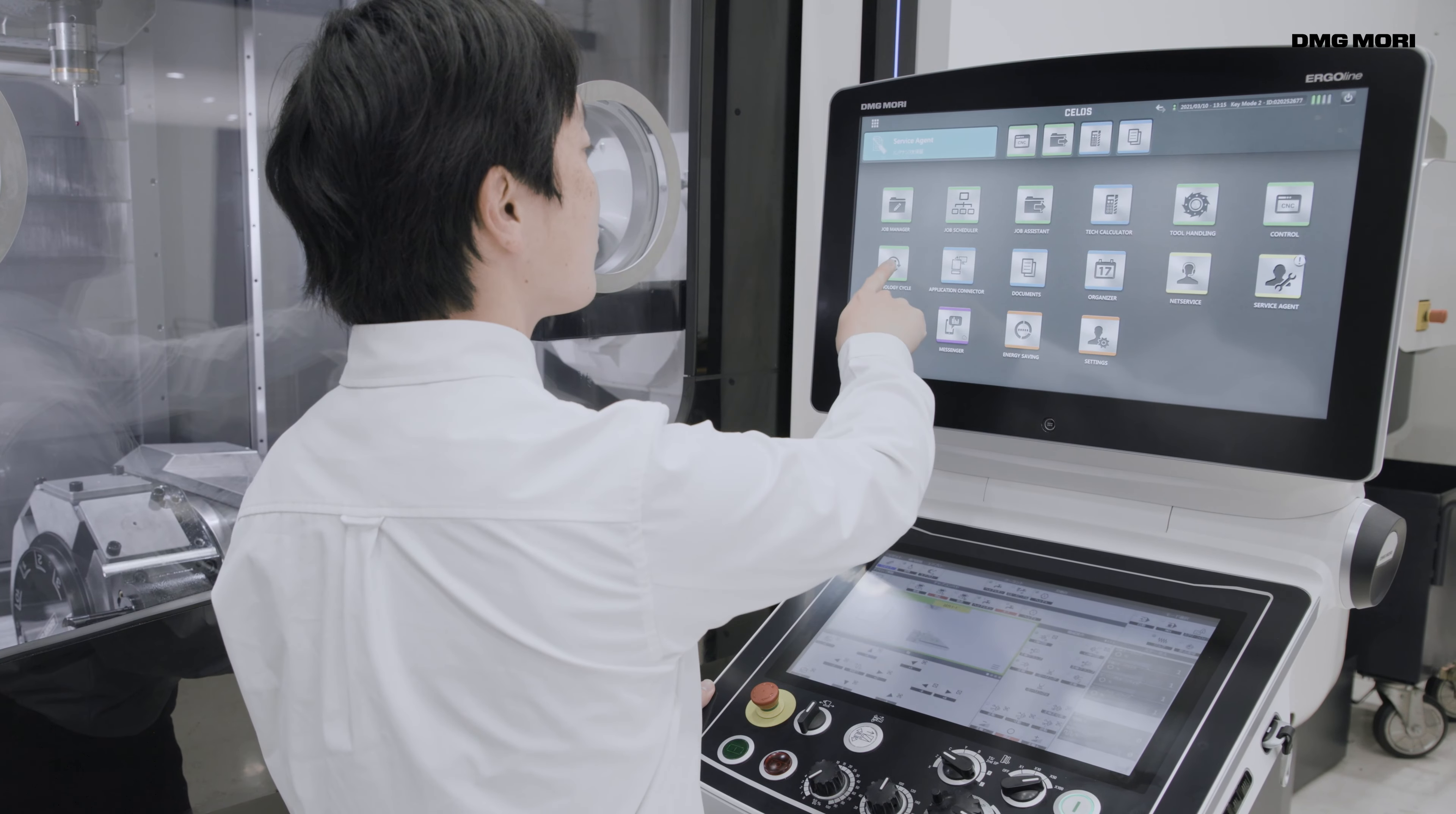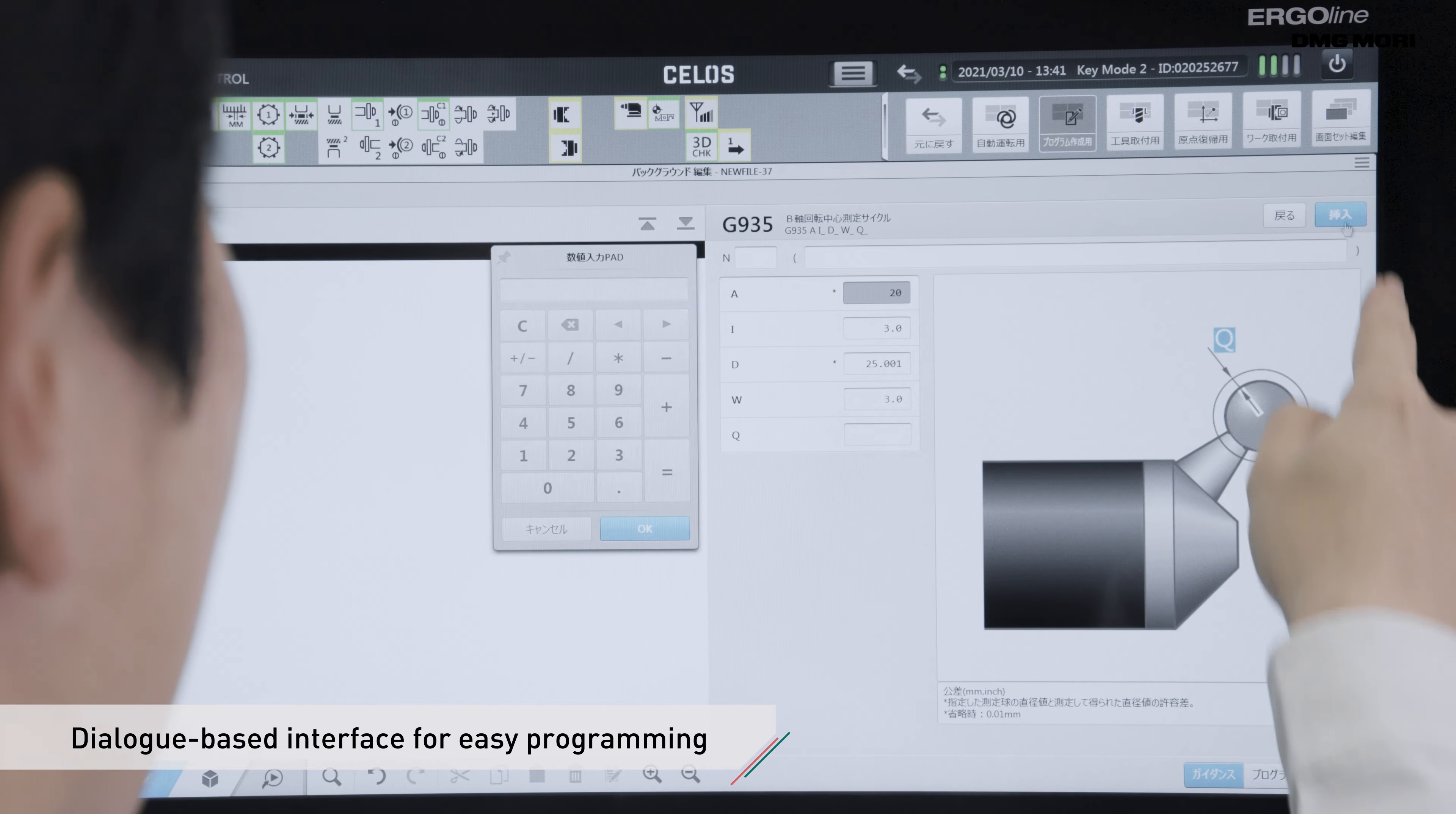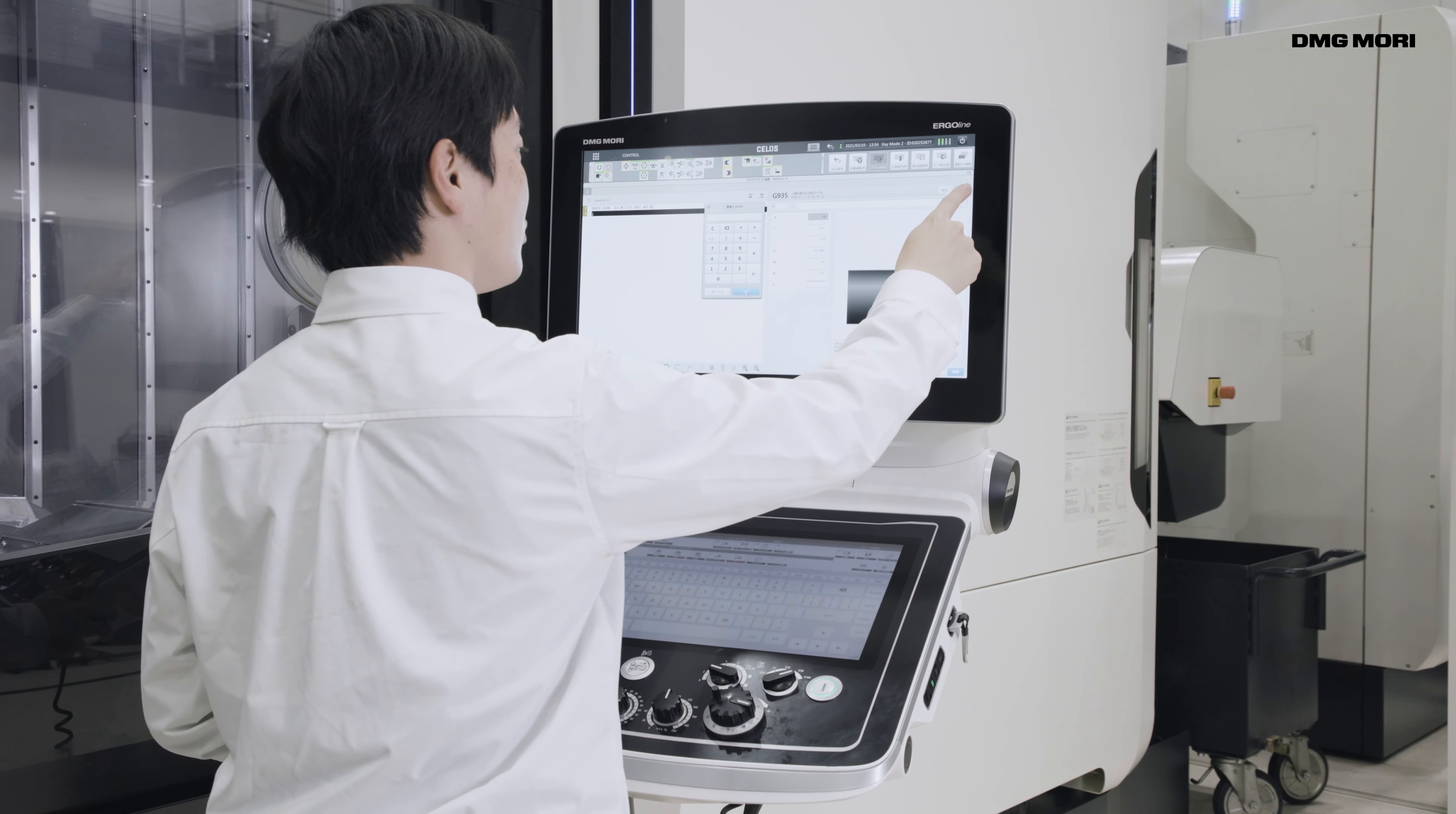The measuring program is created in simple steps. The angles and coordinates of rotary axes can be easily registered with a dialog-based interface. No programming expertise is required to quickly create a program. With 3D QUICKSET, even less experienced operators can create programs with ease.